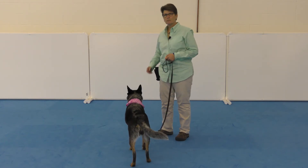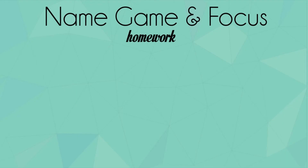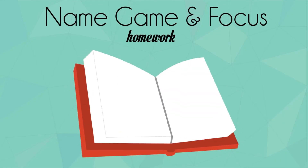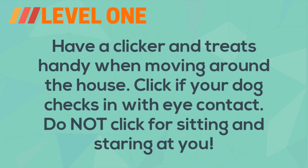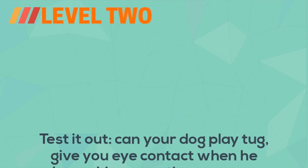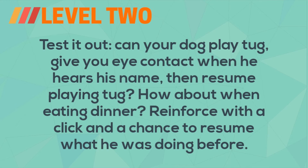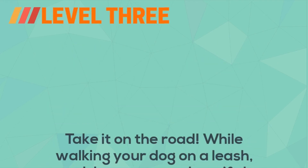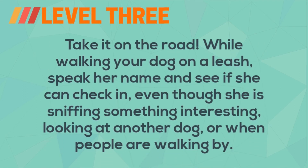Here's your name game and focus homework. Level one: have a clicker and treats handy when moving around the house and click if the dog checks in with eye contact — do not click for your dog sitting and staring at you. Level two: test it out — can your dog play tug, give you eye contact upon hearing his name, then resume playing tug? How about when eating dinner — reinforce with a click and a chance to resume what he was doing before.